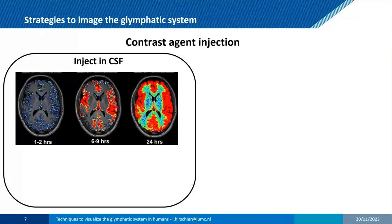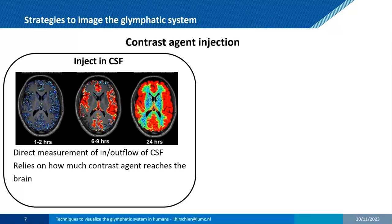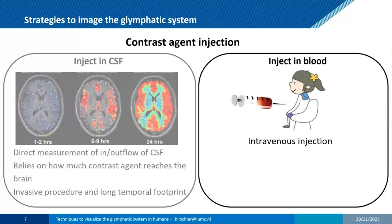Using intrathecal contrast agent injection, you can see the different time points of tracer inflow and outflow, but there is a quite long temporal footprint. It does directly measure the inflow and outflow of CSF tracer in the brain; however, it's quite an invasive procedure, so you cannot simply do this in healthy volunteers.